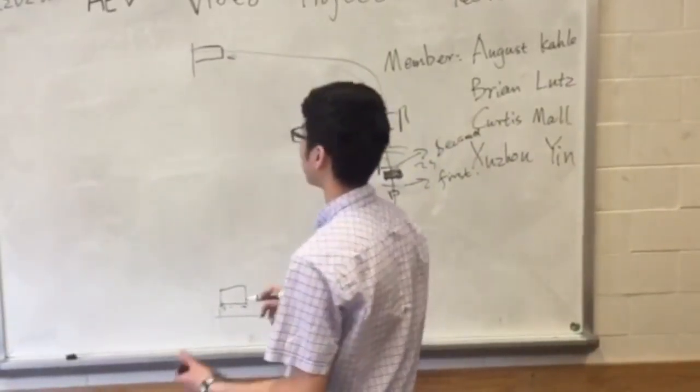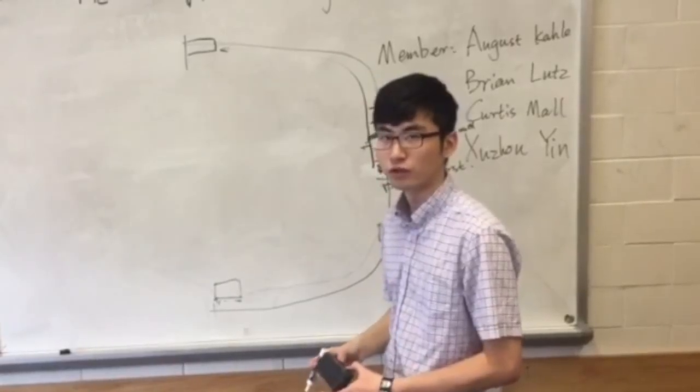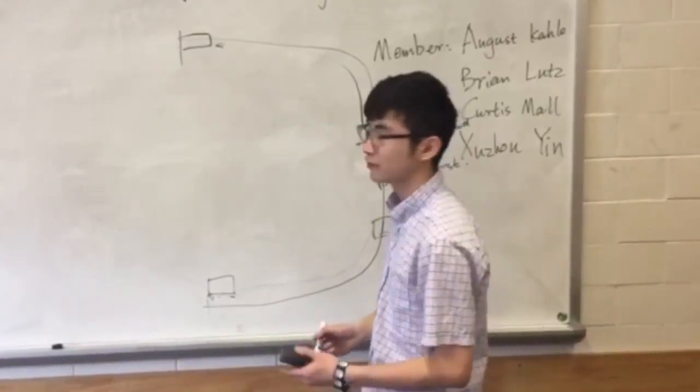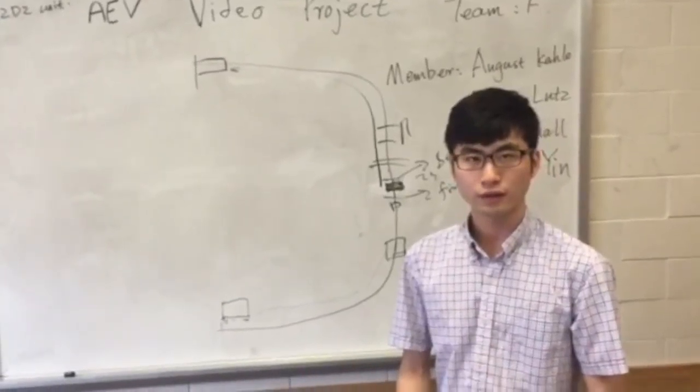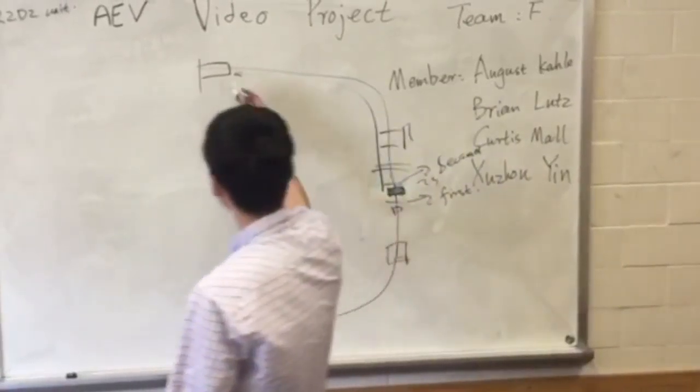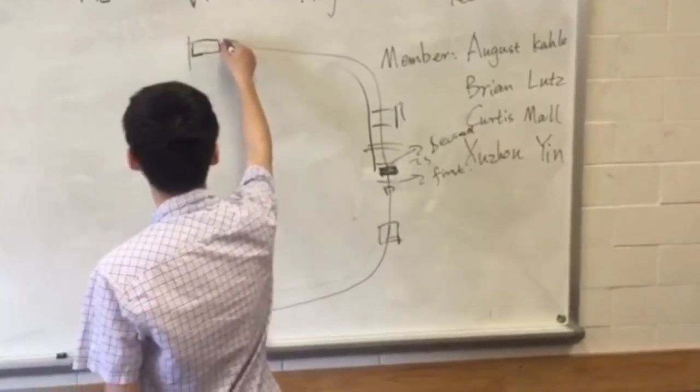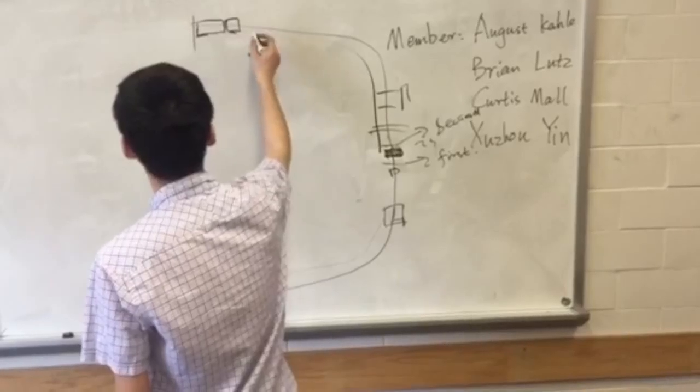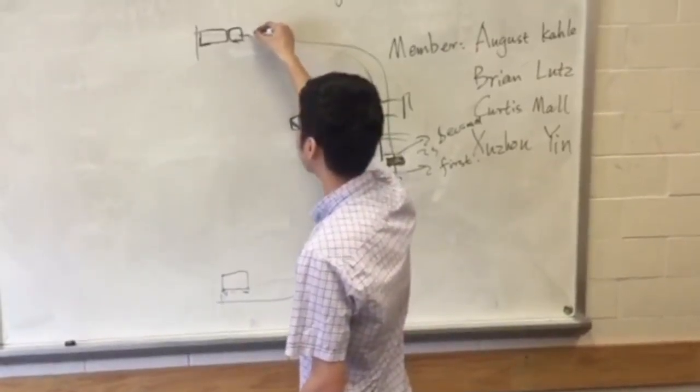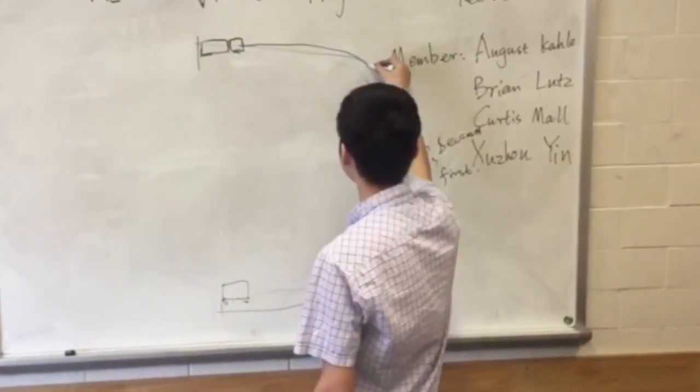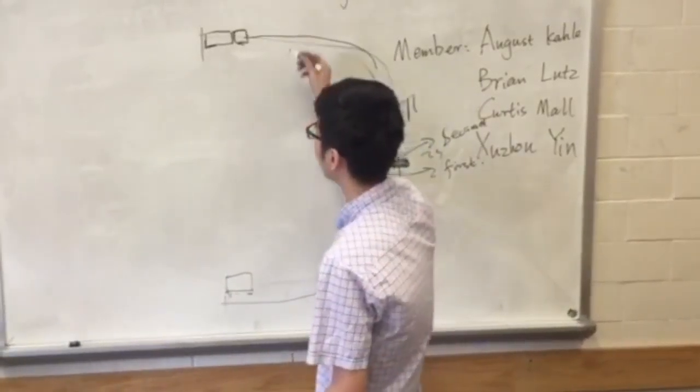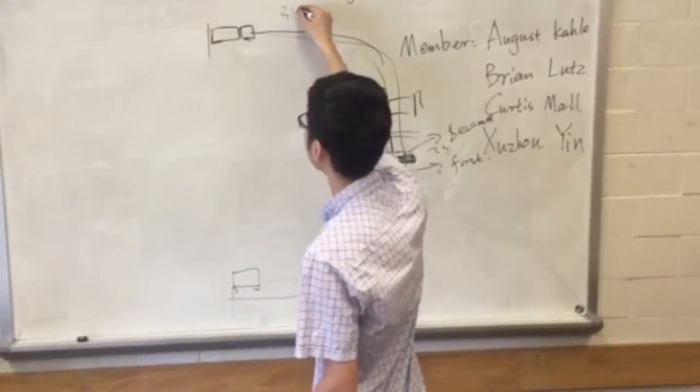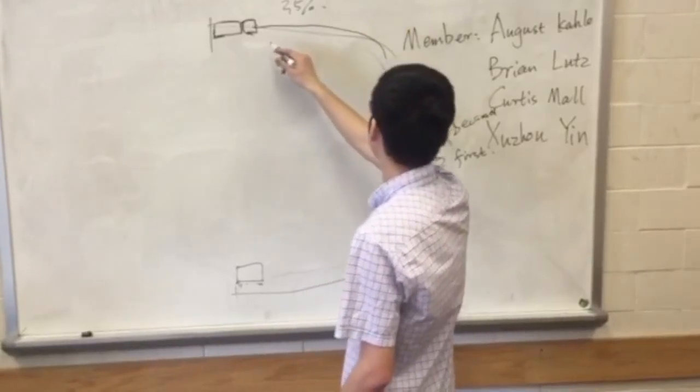So once the AEV goes to here, it should attach the R2D2 unit. So once we attach the R2D2 unit, then the AEV goes back here, and the initial power will be set to 35%.